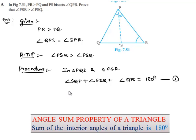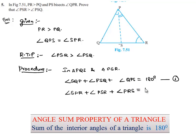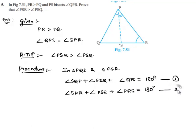And in triangle PSR, the sum of angles is equal to 180 degrees. Thereby we get angle SPR plus angle PSR plus angle PRS is equal to 180 degrees. Let this be equation 2.